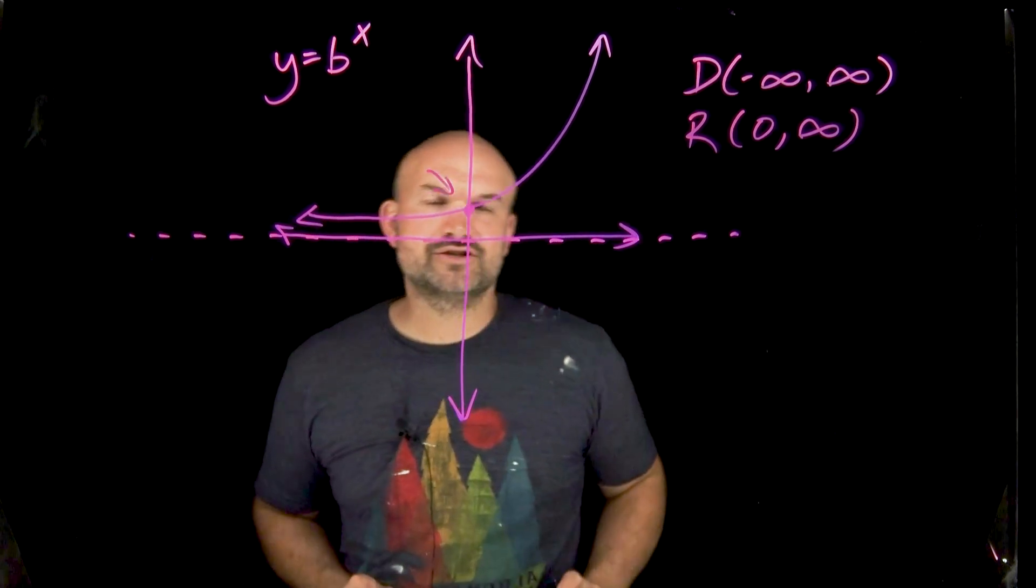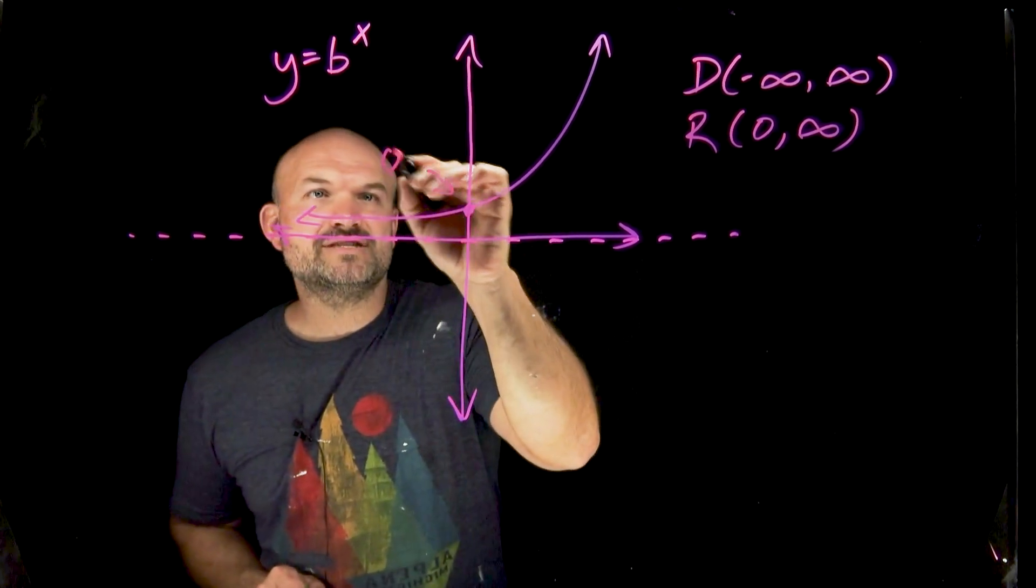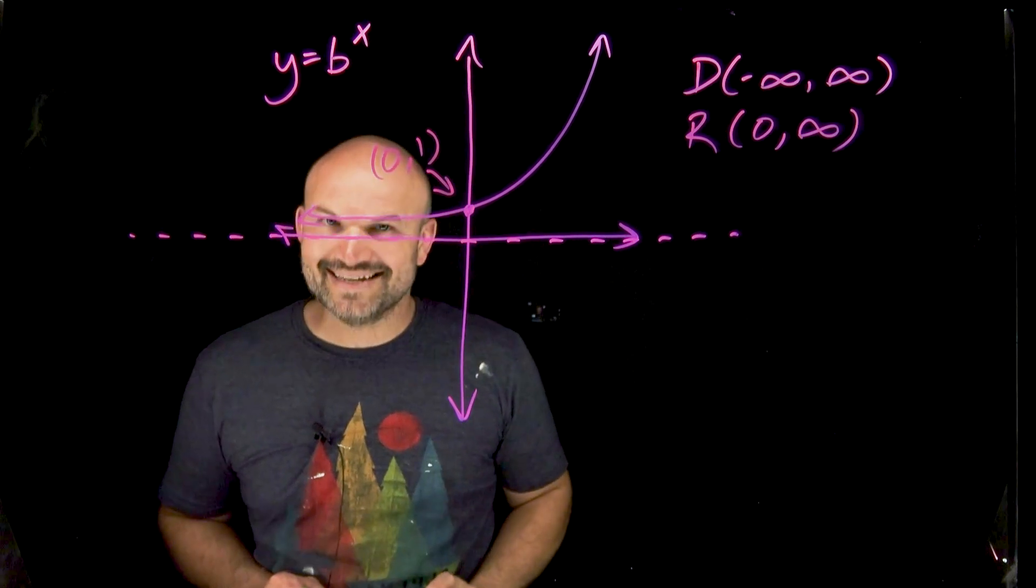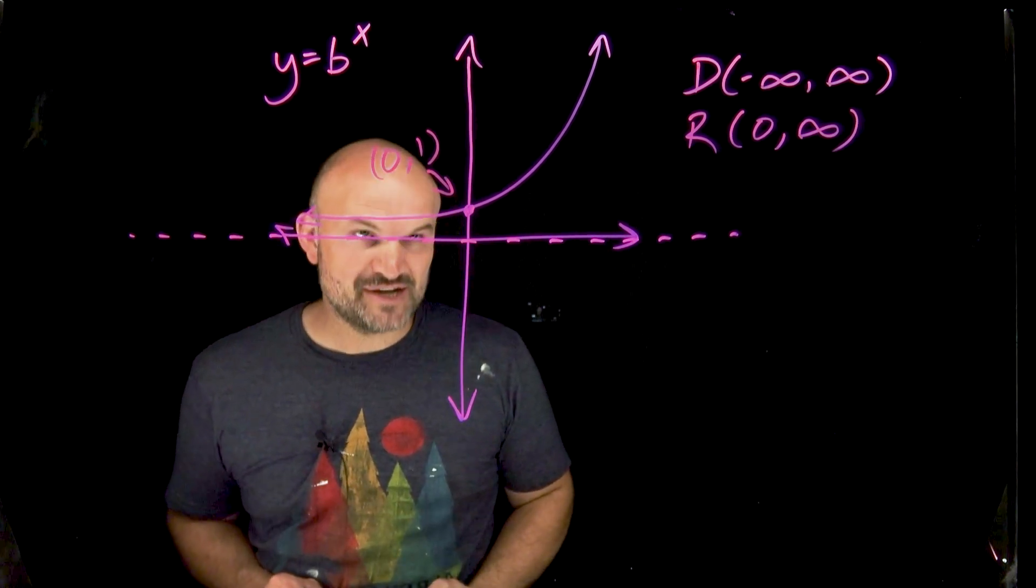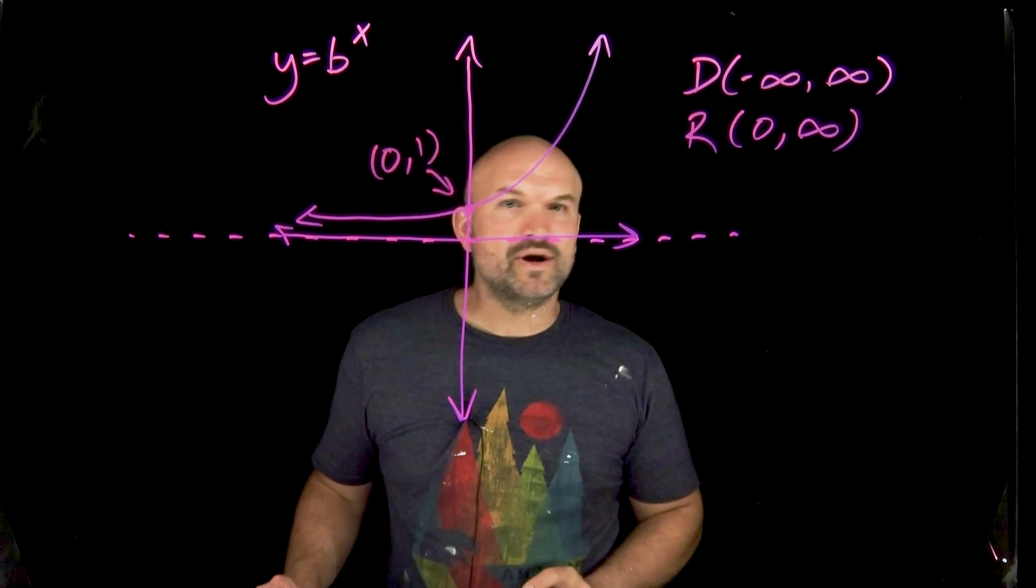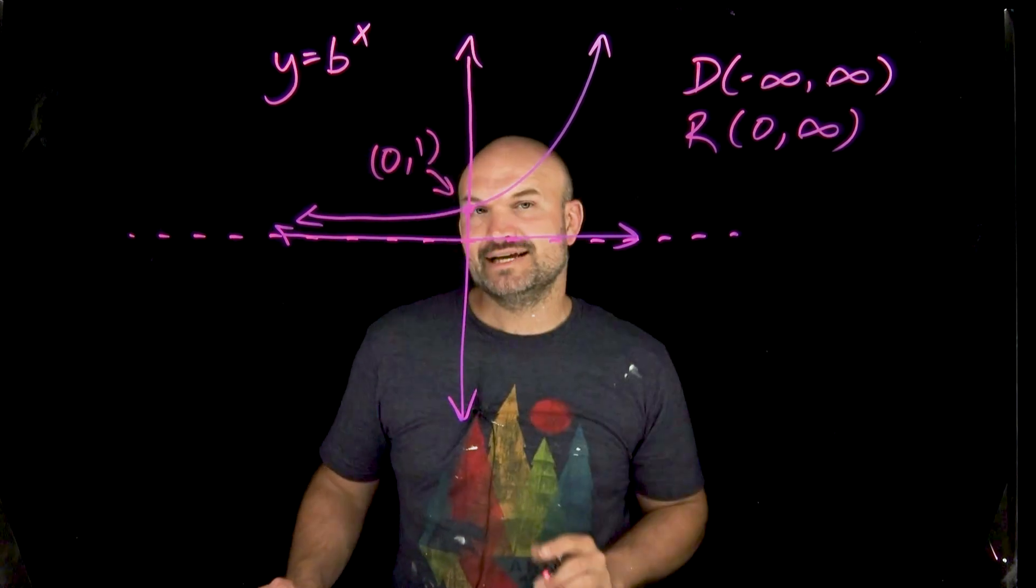The next thing I recognize here is going to be the y-intercept. The y-intercept is always going to be at 0,1. That is until we apply some transformations. So let's go and take a look at what are some transformations that we could apply to this graph.